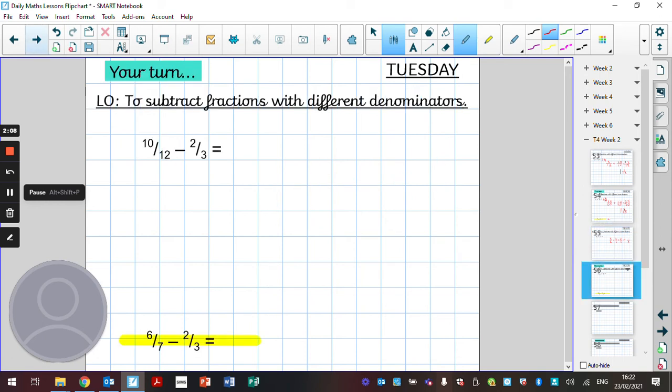Let's have a look at a question I'd like you to have a go at yourself: ten twelfths minus two thirds. Pause the video, have a go at doing that, and when you're ready, unpause the video and we'll have a look at it together. Well done for having a go. We already know the denominators are different, so we need to find a common denominator.